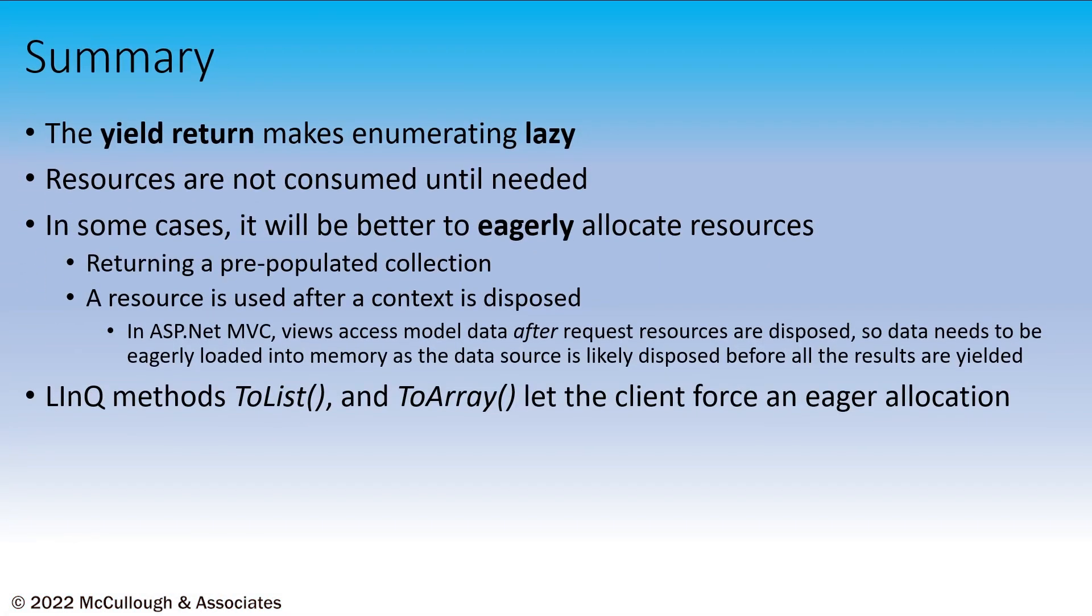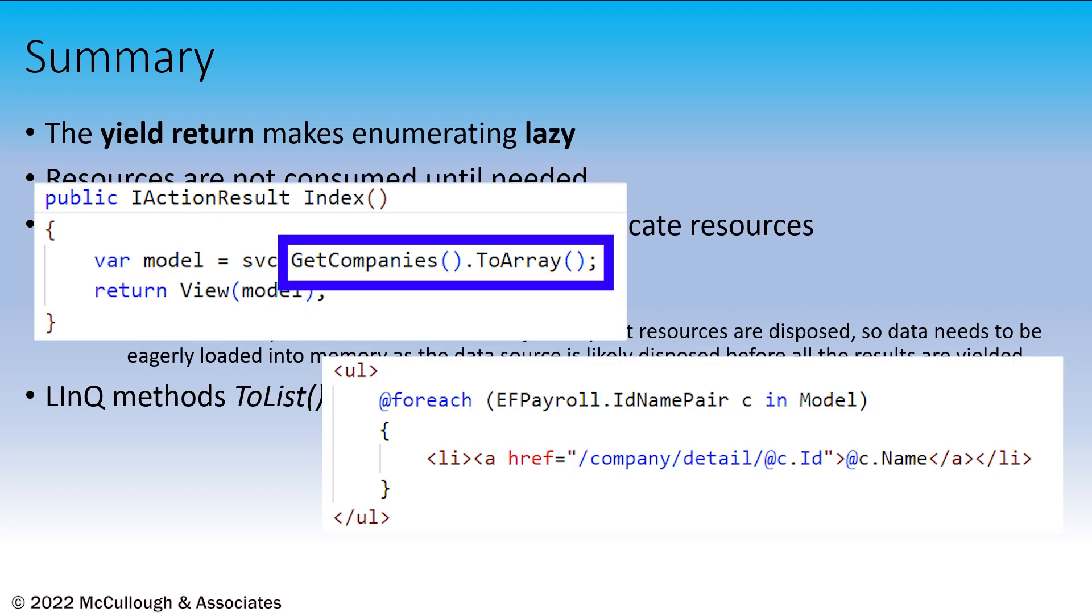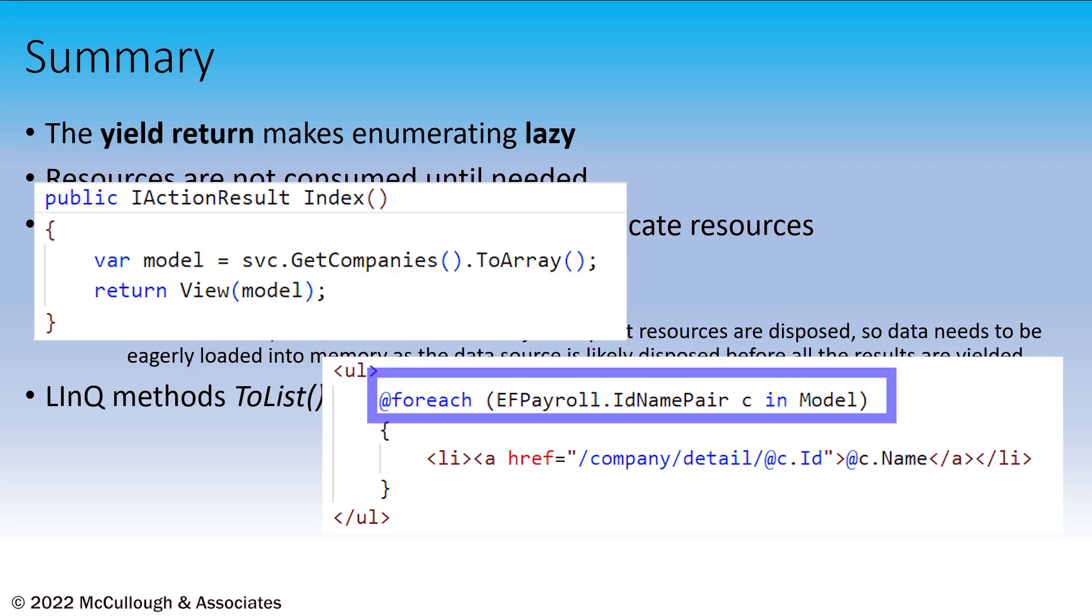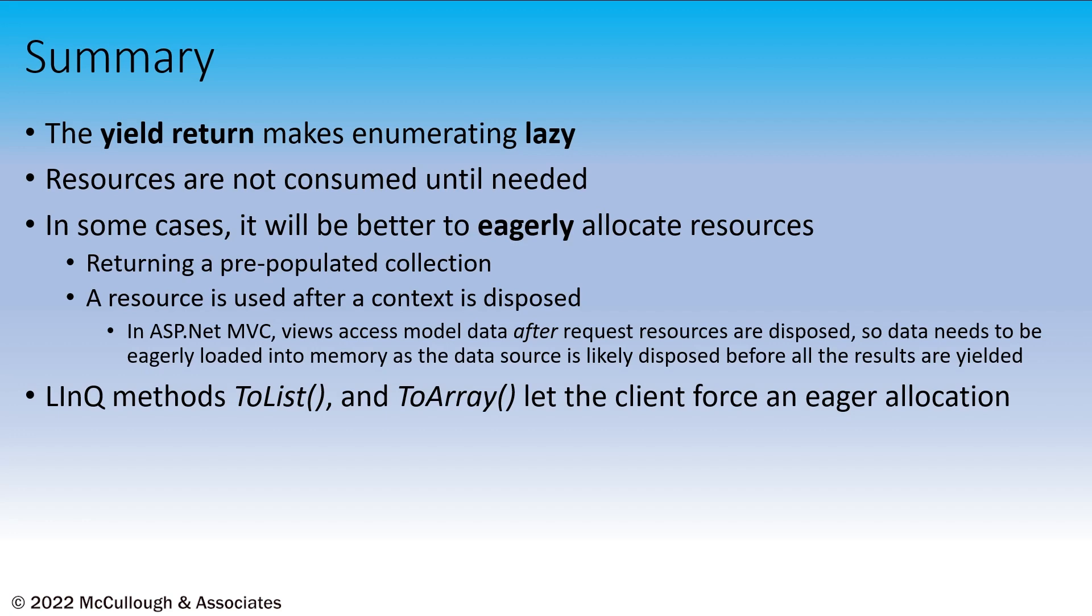To sum it all up, yield return makes looping or enumerating lazy. We don't consume resources until they're needed. In some cases, it may be better to make that allocation up front and populate an array or list. If the data is used in multiple places in our code, it might be better to have it in memory. In ASP.NET, for instance, view processing or view rendering is done as a separate task that might execute after some of the request-scoped resources have been disposed. If the view is iterating through data that's being yielded by, say, a database query, the database may have already been closed if it's request-scoped at the point where the view actually needs to loop through that list. Because of that, our controller logic will always load that data into memory. Our methods that produce the elements should still use yield and let the client decide whether that needs to be cached in memory or not. There are many LINQ methods like ToList and ToArray that do exactly that.